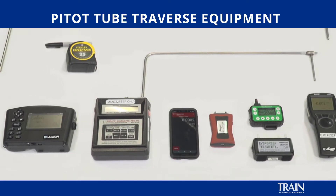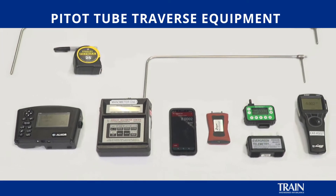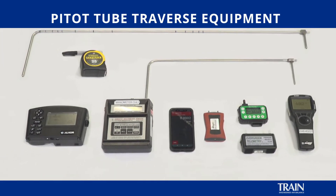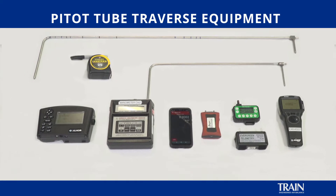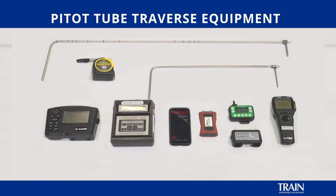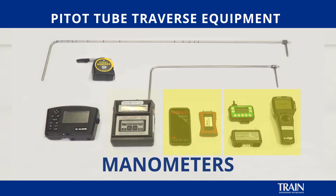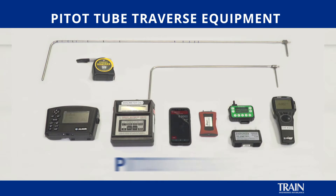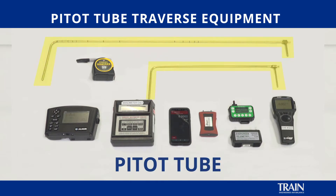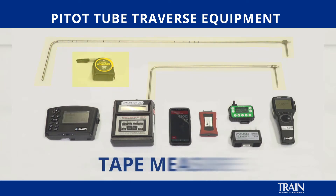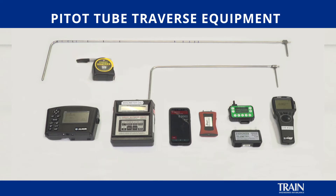Shown here are the different instruments that we're going to need to perform a pitot tube traverse. Featured here are multiple manometers from different manufacturers. We're also going to need a pitot tube, a tape measure which will aid in measuring the grid locations for the pitot tube, and of course the ductwork itself.